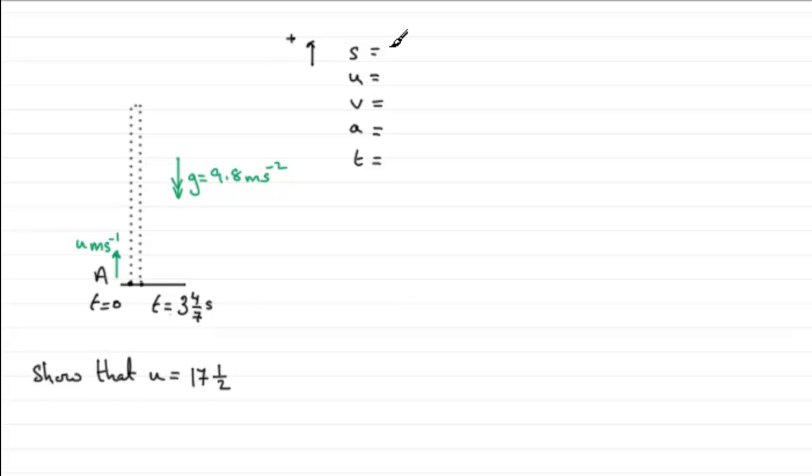So, do we know some of these variables? Well, yes we do. We know S. Remember S is displacement, not distance. So, if we're starting at T equals zero, starting from A, then during this time of three and four seventh seconds, the displacement is in fact zero. It comes back to the place where it started. So, S equals zero.